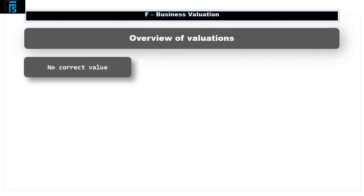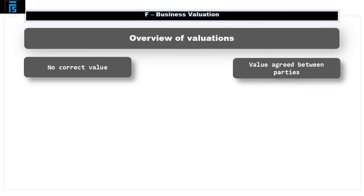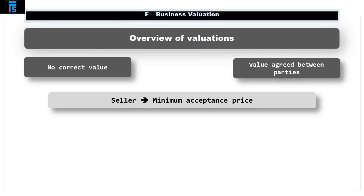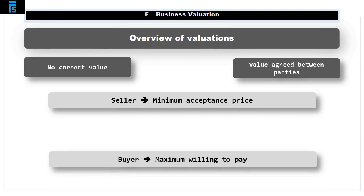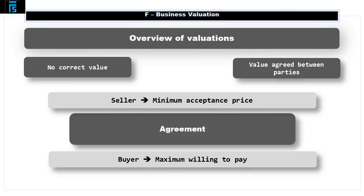An overview of valuations. In many ways, there is no such thing as the correct value of a company. Indeed, the only true value is the value that two parties agree on for the transfer of ownership from one party to another. Having said that, both companies will need to form an opinion as to the amounts they are willing to pay or accept, in order that they can negotiate to a final price. In simple terms, the seller will need to identify the minimum price they are willing to accept, and the buyer the maximum they are willing to pay. Assuming the maximum is higher than the minimum — certainly not guaranteed — then somewhere in between the two is a figure at which both parties would be willing to trade.